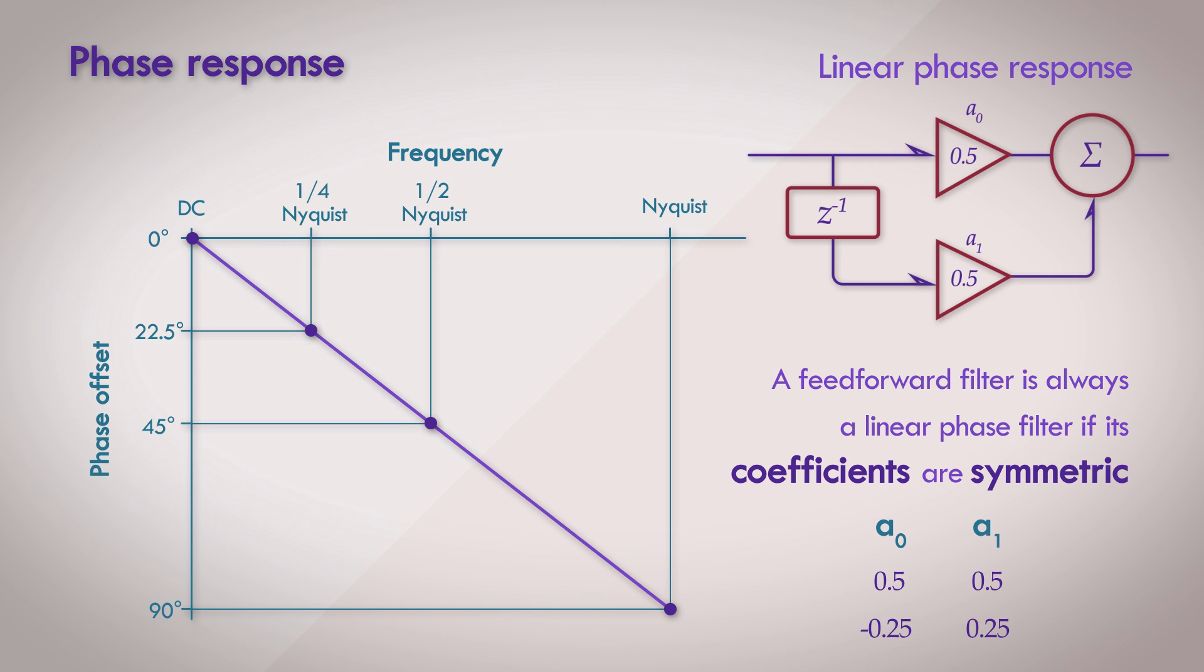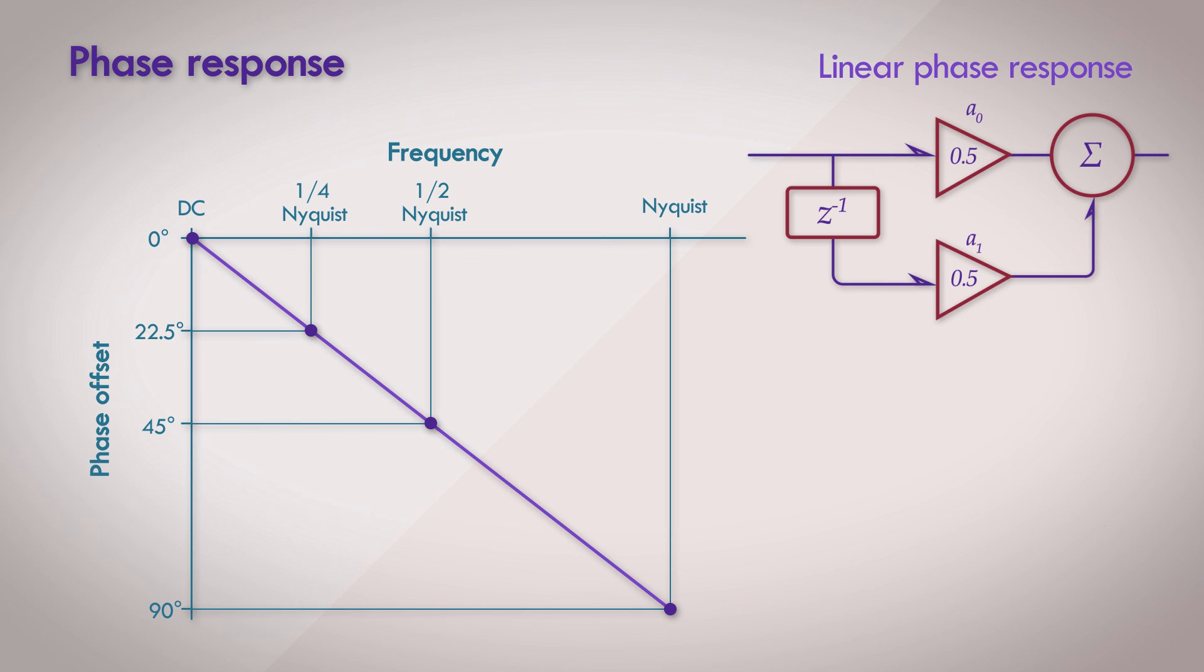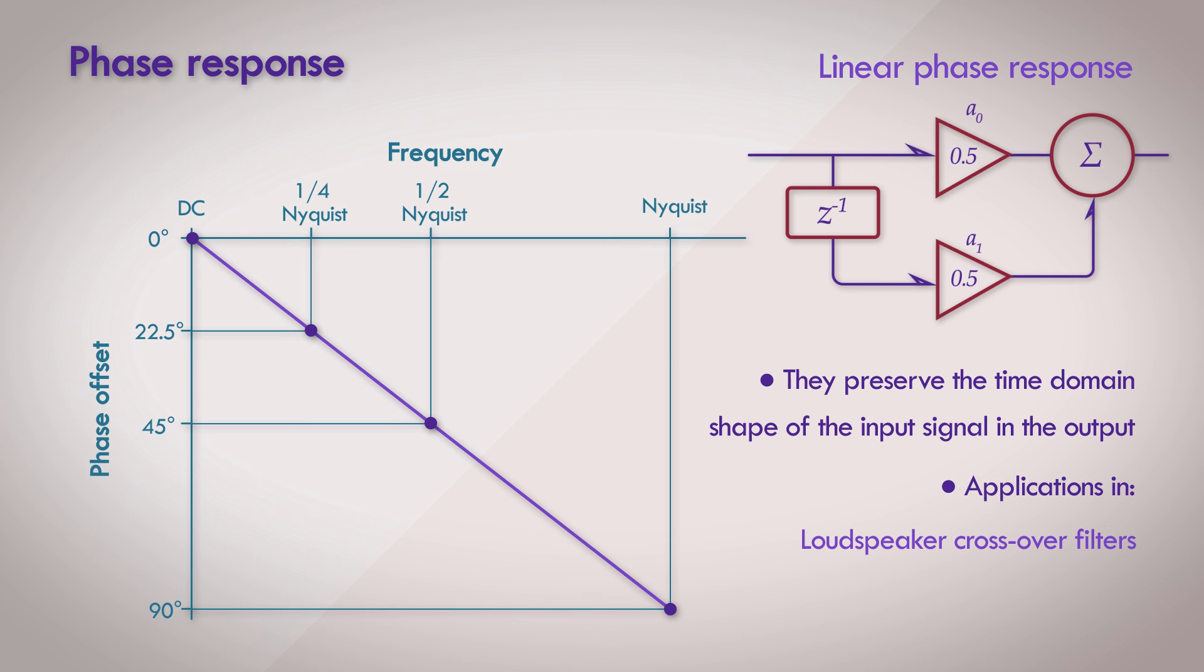Linear phase filters are interesting for two reasons. First, they preserve the time domain shape of the input signal in the output. This kind of response cannot be obtained from analog filters, or in IIR filters, which we'll study later on. Second, this kind of filter has useful applications where phase linearity across the spectrum is important, such as filters for loudspeaker crossovers, or in multiband effect processors. We'll dedicate a video to talk more about linear phase soon enough.